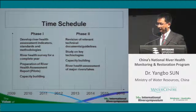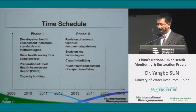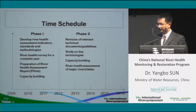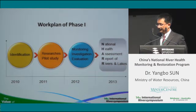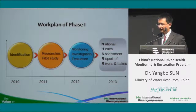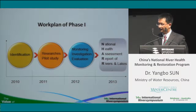This river health assessment program comprises two phases, starting from 2010. By the end of next year we will finish phase one, which is mainly investigations and studies. For phase two, we will select a pilot area and produce the first river health assessment report. The work plan for phase one starts from problem identification, followed by monitoring, data collection, and investigation research. By the year 2013, we will produce the first national river health assessment report.